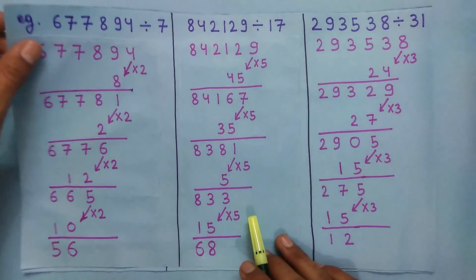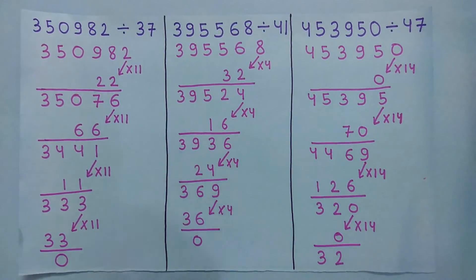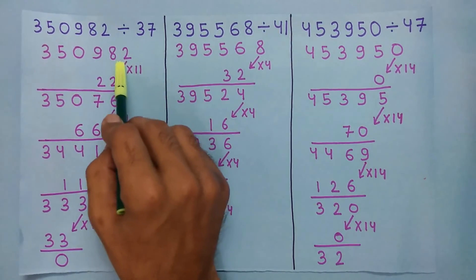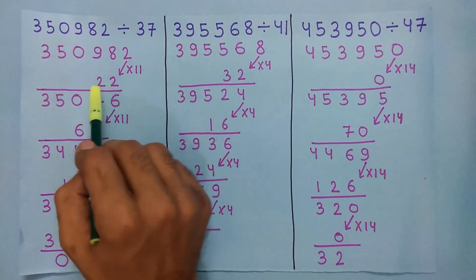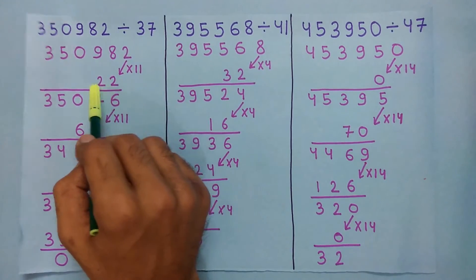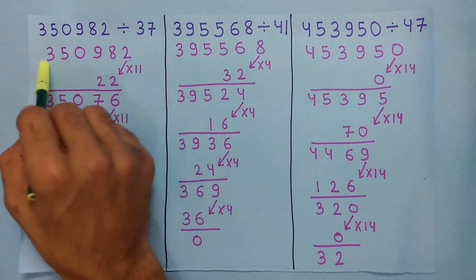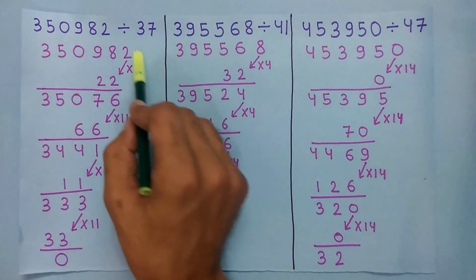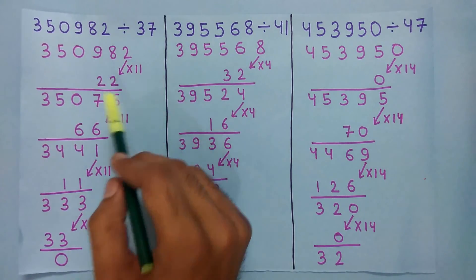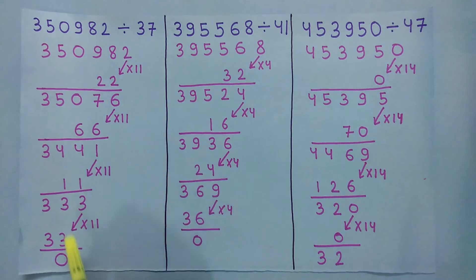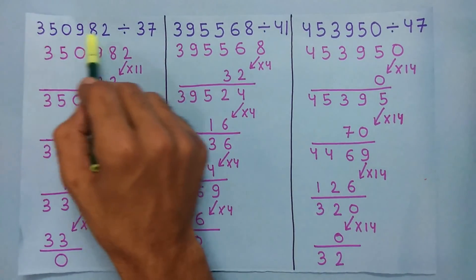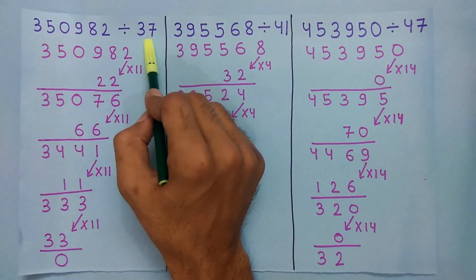Now let's take an example for 37. To check if this number is divisible by 37 or not, multiply the last digit by 11 and we get 22. Now subtract this 22 from the remaining number and we get this number. We repeat the process until we get a small number. In this case the small number is 0, and 0 is divisible by 37, so this number is also divisible by 37.